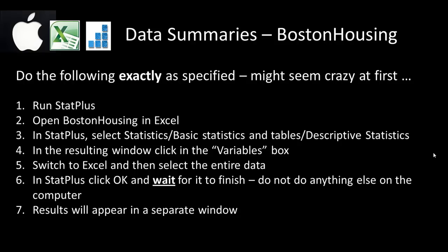Then switch to StatPlus, select Statistics, Basic Statistics and Tables, Descriptive Statistics. That will bring up a particular window. In that window, there is a box called Variables — your cursor should already be in that box. If not, click in that variable box. With the cursor in that box, switch over to Excel where you have your Boston Housing data loaded and select the entire data — all 15 variables and all 506 rows. Through inter-process communication in Apple, the selection is filled up in the variables box. When you go back to StatPlus, your range is filled up and then you click OK.